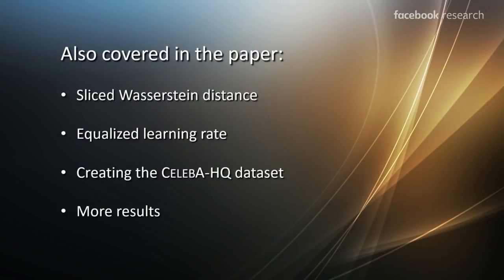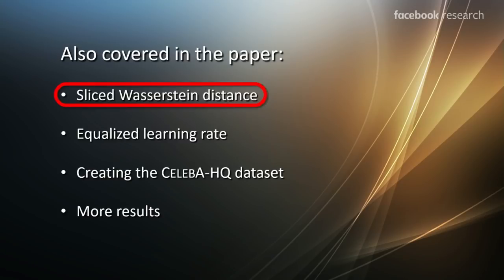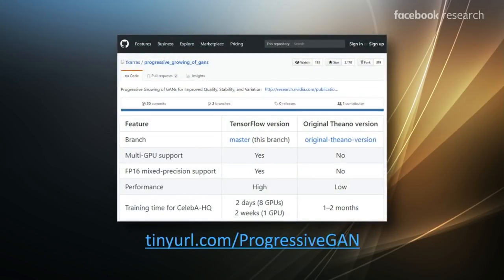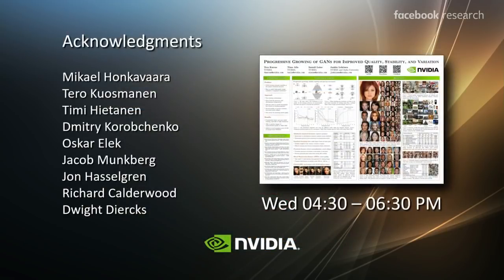Our paper covers several other contributions I will skip here, but I should mention that we found it extremely important to have a reliable metric to judge the quality of results, especially for hyperparameter search. We didn't have good ones when we started, so we invented our own. These days there is, for example, the Fréchet Inception Distance, which is pretty good. Our implementation, networks, and other material are publicly available. With enough GPU power, you can train these 1K by 1K networks in two days. Come see our poster on Wednesday.